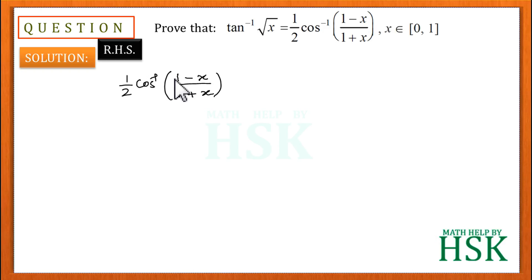1/2 cos inverse of (1 minus x) upon (1 plus x). Now to simplify this, I'm going to do a substitution. The substitution is: I'm going to put x equal to tan square theta. I placed x equal to tan square theta because this